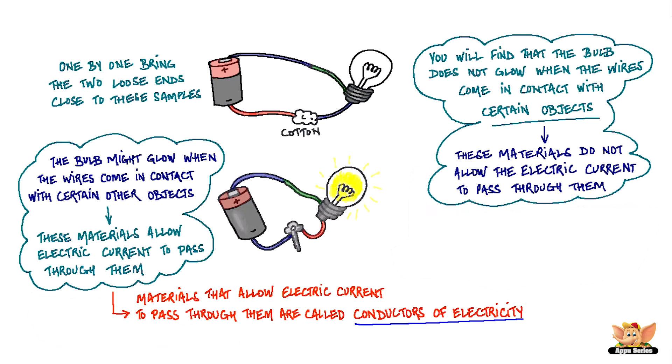Materials which allow electric current to pass through them are called conductors of electricity. For example, metals, coin, foil, key, etc.